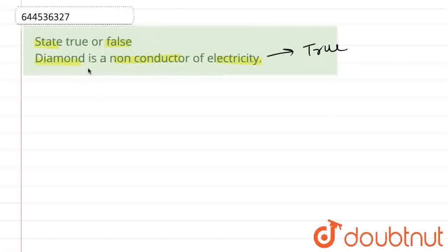The reason being, as it is saying that diamond is a non-conductor of electricity, we know that if any substance wants to conduct electricity, they must contain free electrons. They must contain free electrons.